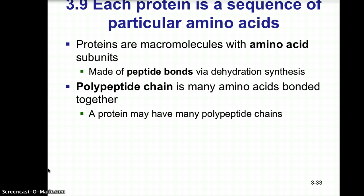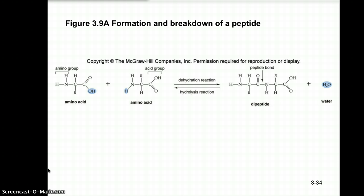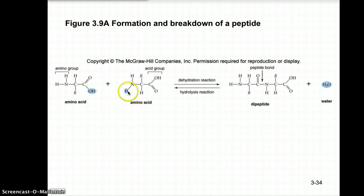A protein may have many polypeptide chains incorporated into it. In a typical amino acid structure, you have an amino group (NH2) on one end and a carboxyl group (C double bond OH) on the other, with an R group below representing the rest of the hydrocarbon. During dehydration synthesis, one amino acid loses the hydroxyl group and another loses a hydrogen, forming a water molecule as a byproduct and joining the two amino acids via a peptide bond to create a dipeptide.